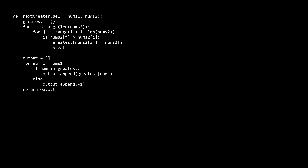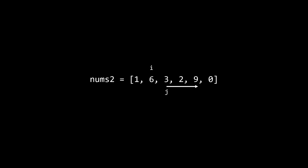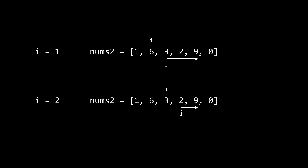Now that we've seen the brute force solution, let's try and improve it. The costly step is the nested for loop, which is redundant because it unnecessarily iterates over the same elements multiple times. For example, when i is on 6, j iterates from 3 to 9. But on the next iteration where i is on 3, j iterates from 2 to 9. This is redundant because we could have learned from the previous iteration that 9 is going to be the next largest for 3. We need a way of remembering the numbers we have encountered, so that when we do encounter a larger number, we can say for all those numbers, this larger number is going to be the next largest.